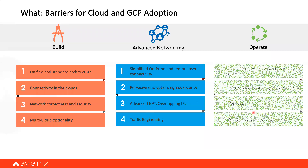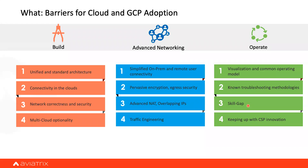The third bucket is operations. Once you've built something and provided advanced networking, you need to run it — properly monitored with observations, monitoring, and automation. You can't retrain all your employees to learn every cloud. The tools used in the on-prem world — ping, traceroute, packet capture — need to be available in the cloud as well. These are the three main areas when it comes to GCP adoption.